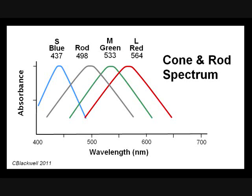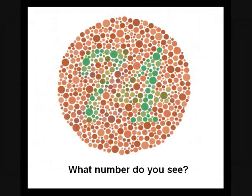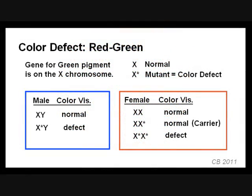Red-green deficiency affects about 1 in 20 males. A normal person sees the number 74 on the typical test plate, while a red-green deficient person sees 21. The red-green defect affects mainly males because the gene is carried on the X chromosome. Since men are XY, they have only one copy of the gene; if it is a mutant, there is not a normal gene to overrule it. Women are XX, so having two copies of the gene, both have to be mutant for them to show the trait. But if she has one normal and one mutant gene, her vision is normal, but she is a carrier. If she has a son, he has a 50% chance of being affected.